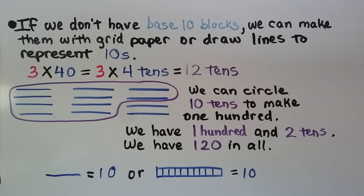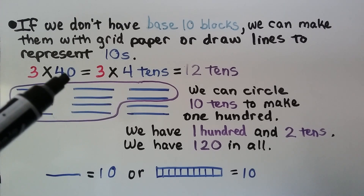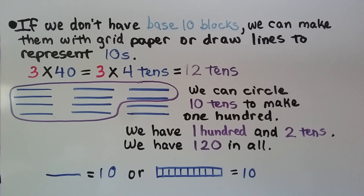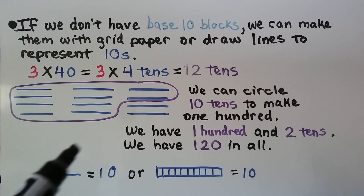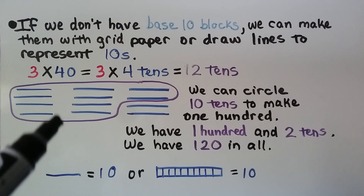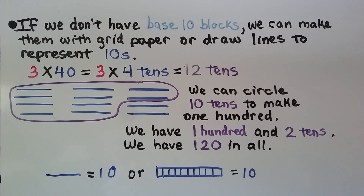If we don't have base 10 blocks, we can make them with grid paper and color them in, or draw lines to represent tens, or make a bar with 10 little squares to equal 10. Our problem is 3 times 40, which equals 3 times 4 tens. The basic fact is 3 times 4, so we have 3 times 4 tens, which is 12 tens. We make 3 groups of 4 tens and circle 10 of them to make 100, leaving a 100 and 2 tens — 120 in all.